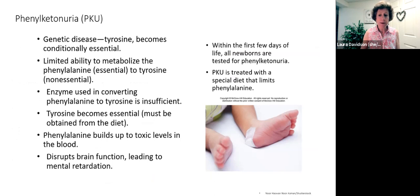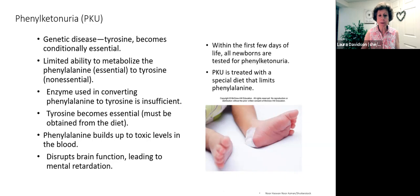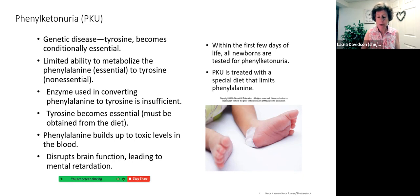There are nine essential amino acids. There are also some that are termed conditionally essential, which means in some conditions they become essential. Tyrosine is conditionally essential in the case of the genetic disease PKU, because in that disease the individual has a limited ability to convert phenylalanine to tyrosine, and therefore tyrosine becomes essential. This condition is tested for at birth, and it's very important that it is, because detection enables the infant to be placed on the proper diet, which will preserve brain function.